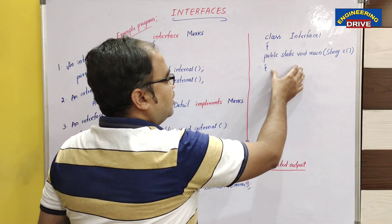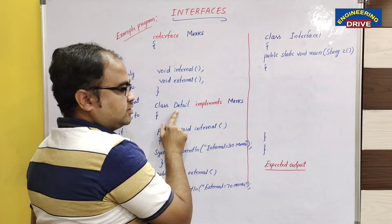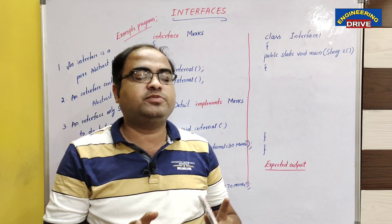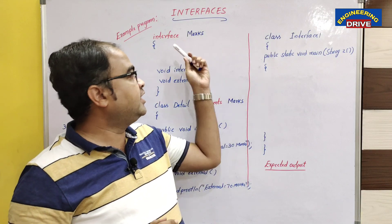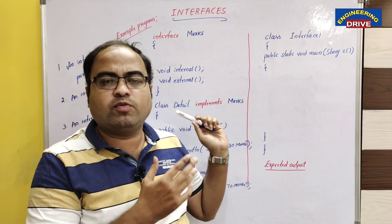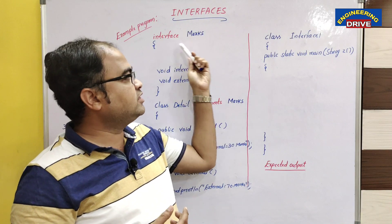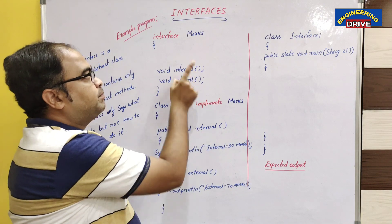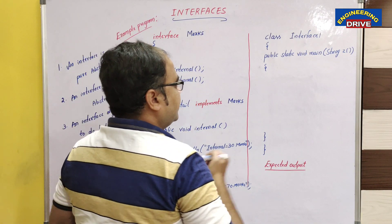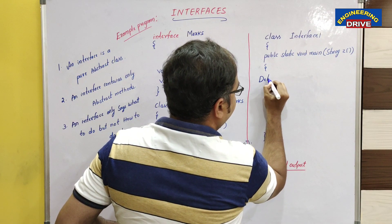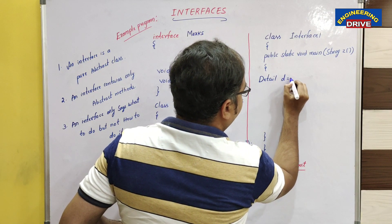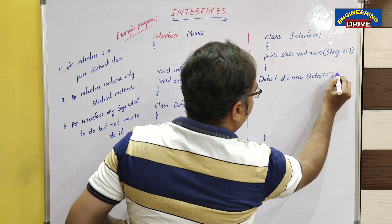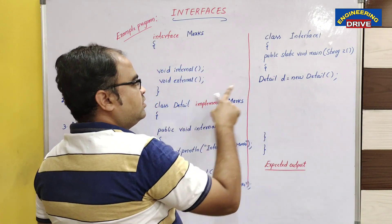Now I want to create an object for this class. Student question: Can we create an object for the interface? No, it is not possible. Just as we cannot create an object for an abstract class, similarly interface is also a pure abstract class, so we cannot create an object for interface either. To create an object, we need to create it for the class which implements the interface: detail d = new detail().